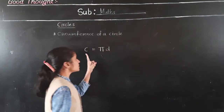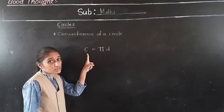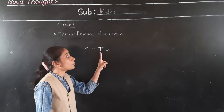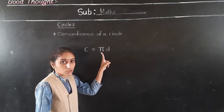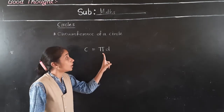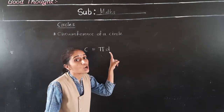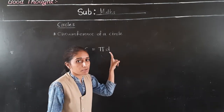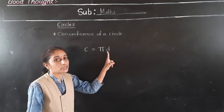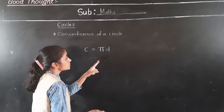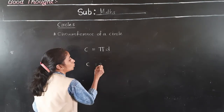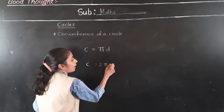So circumference C means: circumference of a circle is equal to π D. Pi means 22 upon 7 or 3.14, multiplied by D. D means diameter — pi multiplied by diameter.